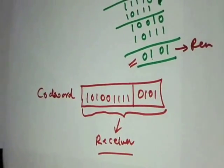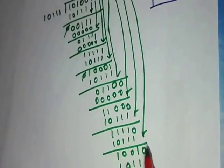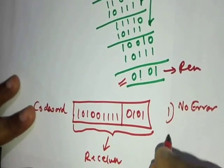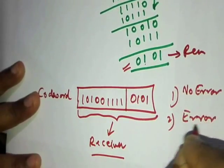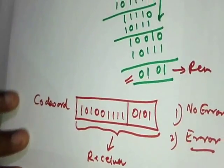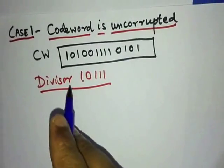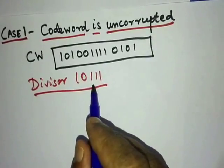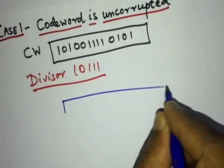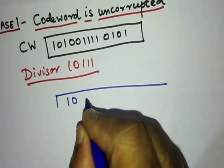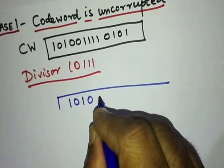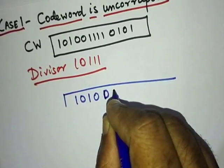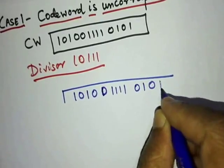This code word is what is sent to the receiver. Let's discuss two scenarios. The first scenario is where there is no error in the code word. The second scenario introduces an error in the code word and we will see how CRC is used to find the error. You have to be very careful with your zeros and ones, because once you make a mistake it is very hard to find it until the last step.